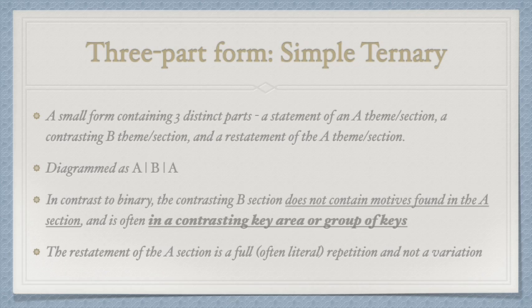However, in many classical period works, the B section doesn't modulate at all and has contrasting material in its theme. It usually also has some contrasting character. For example, if the A section is sort of stiff and formal, the B section might be a little bit more melodious or flowing.